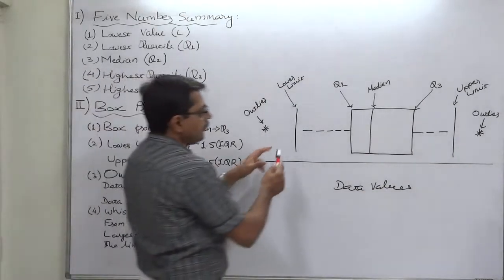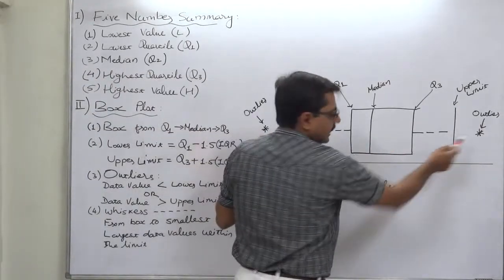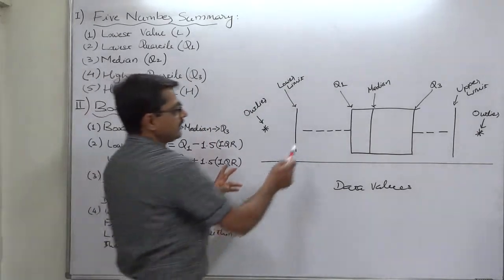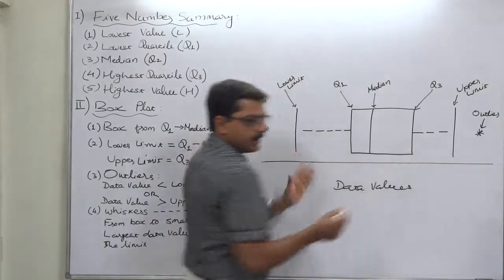The viscers are from the box or rather limit of the box to the smallest value within the lower limit. And on right-hand side, the viscers starts from the end of the box and it goes to the highest or largest value within the upper limit. So, viscers are not from the box to the outliers, but they remain within the lower and upper limit.